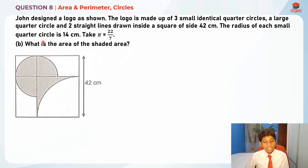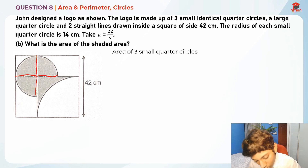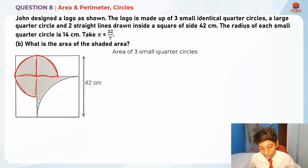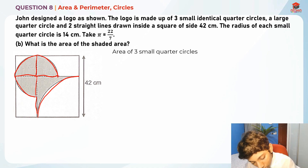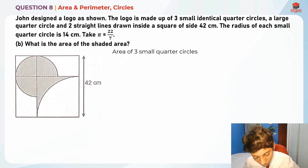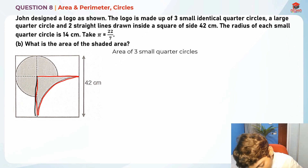For Part B, they are asking us what is the area of the shaded area? In order to find the area of this red-colored part, it's actually quite simple. Let me draw this for you to visualize — when you see this type of question, you need to learn how to visualize. What we're going to do to find this area is to take a square minus the big arc.